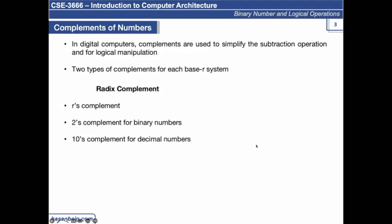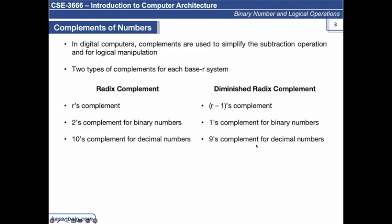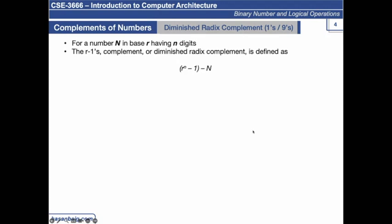Another way of representing a negative number is called the diminished radix complement, or r minus one's complement. For binary, two minus one gives ones complement; for decimal, ten minus one gives nine's complement. You do not need to remember 'r minus one' — what you need to remember is either ones or twos complement, or nines or tens complement. The diminished radix complement is discussed because it helps us convert a number into r's complement based on this calculation first.